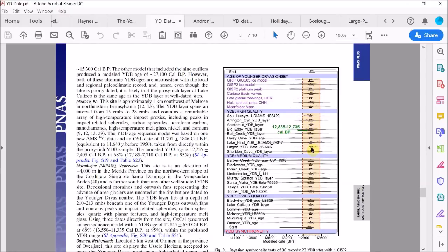Now this graphic is their main result and it shows the estimated age distributions for all of the Younger Dryas boundary layer sites and compares them with independent age estimates for the onset of the Younger Dryas cold period up here. That's what all of these different measurements are in this section.